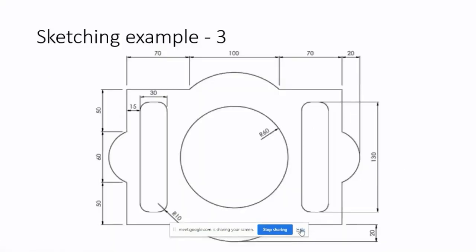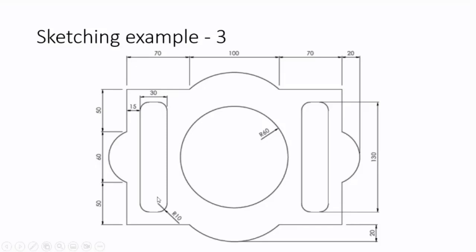So this is the example we are going to draw. Whenever you are drawing something we have to assess what are the total dimensions and which features we are going to use. This particular portion, the boundary can be drawn using a rectangle. The length is 70 plus 100 plus 70, and this side is 50 plus 60 plus 50. The centre of the rectangle and the centre of the circle coincide, so you can use a centre point rectangle to make it easier to draw.